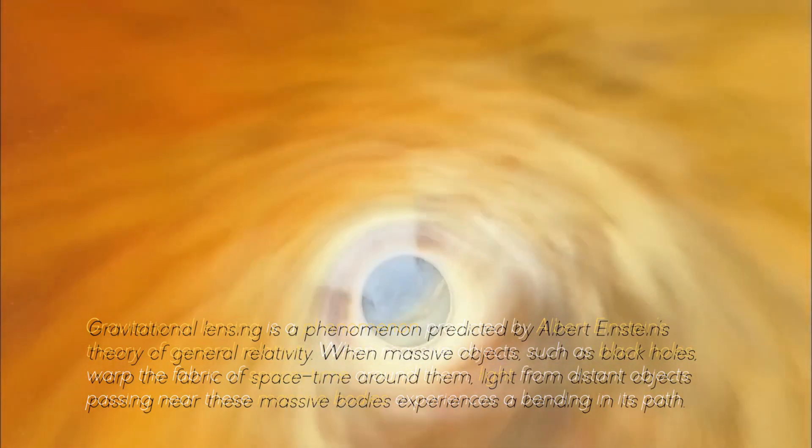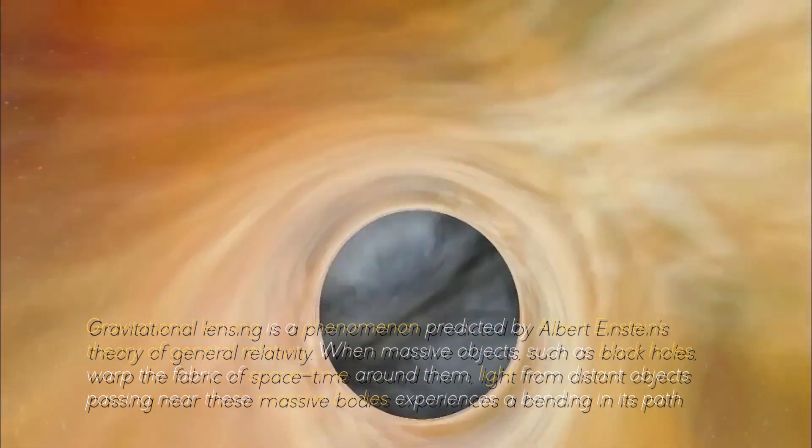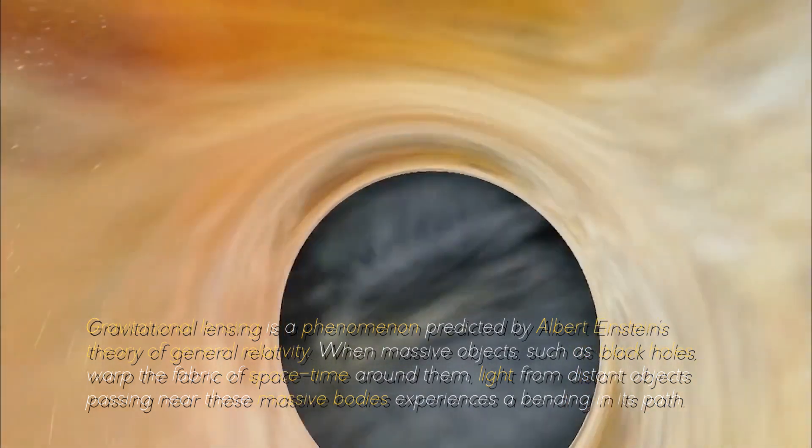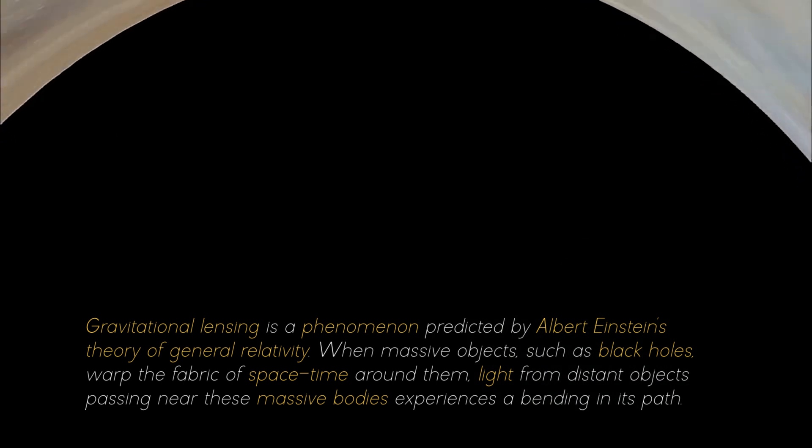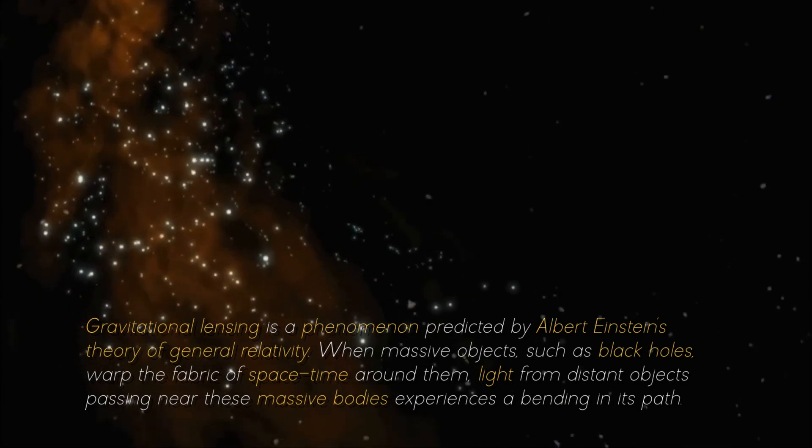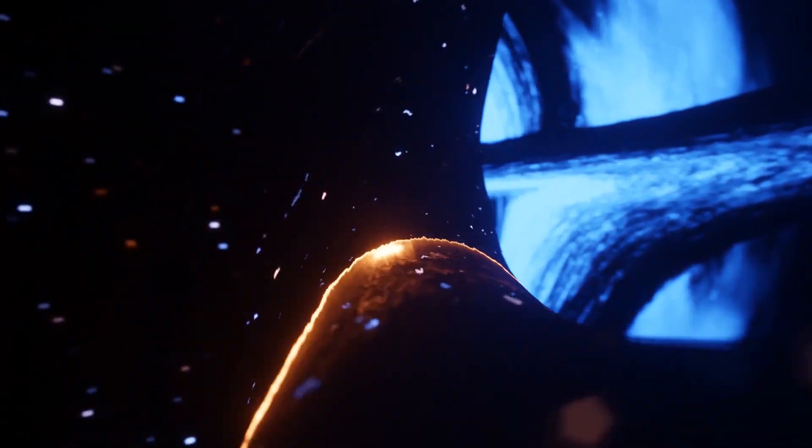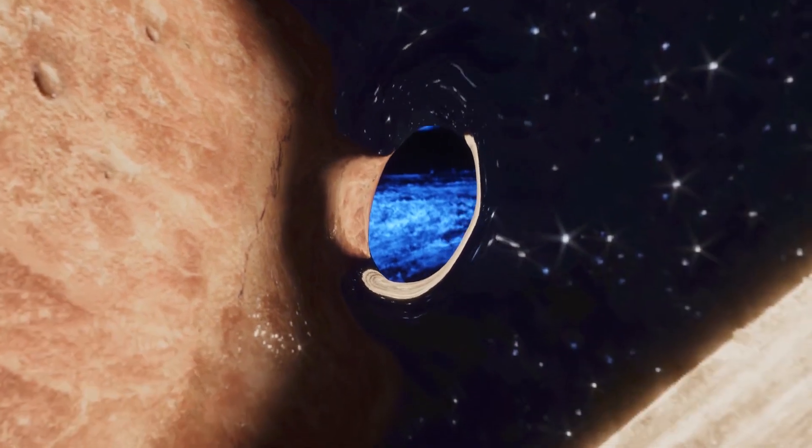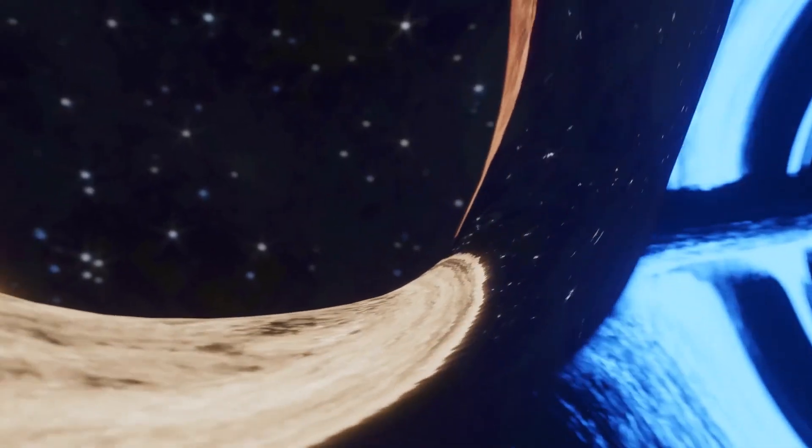Gravitational lensing is a phenomenon predicted by Albert Einstein's theory of general relativity. When massive objects, such as black holes, warp the fabric of space-time around them, light from distant objects passing near these massive bodies experiences a bending in its path. This results in a visual distortion or magnification of the object's image. Massive bodies, such as stars or black holes, are especially effective in causing significant gravitational lensing due to their immense gravitational attraction.